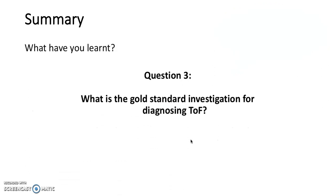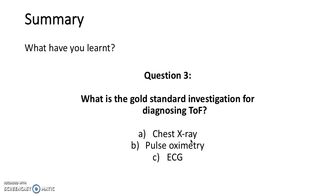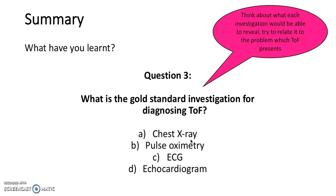Question 3: What is the gold standard investigation for diagnosing tetralogy of Fallot? Is it A, chest x-ray; B, pulse oximetry; C, ECG; or D, echocardiogram? The answer is echocardiogram. Okay, well done everyone. That's the end of the presentation. I hope you've learned a lot and I hope it's been interesting. Please come back for more revision materials, and we hope to see you soon. Bye!